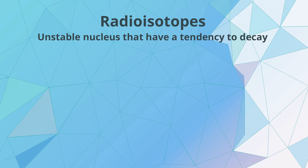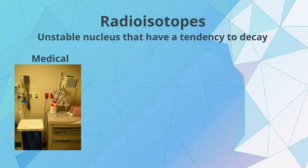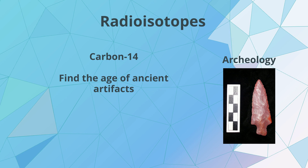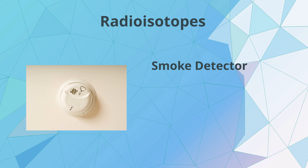Radioisotopes are isotopes with an unstable nucleus that have a tendency to decay. The application of radioisotopes varies vastly across industries, medical fields, agriculture, and archaeology. In archaeology, radioisotope carbon-14 is used to study and estimate the age of ancient artifacts — a method named radiocarbon dating, which can be used to estimate the age of organic materials. Another use for radioisotopes is in smoke detectors, with americium-241 as its source.